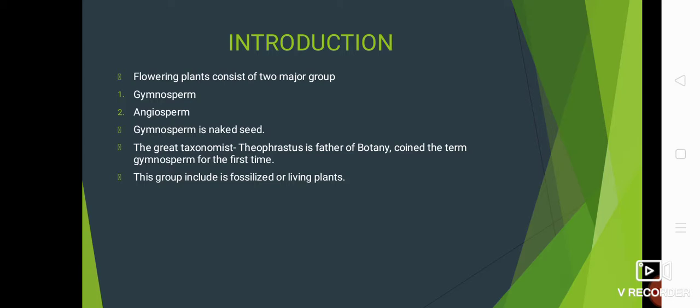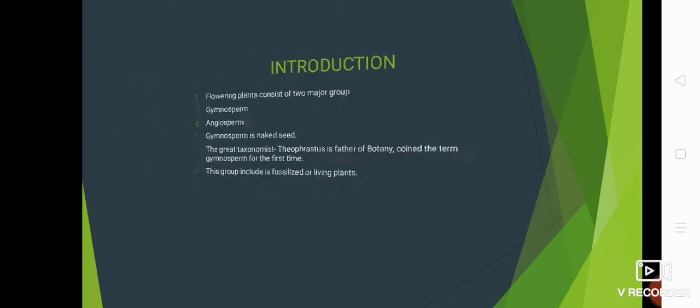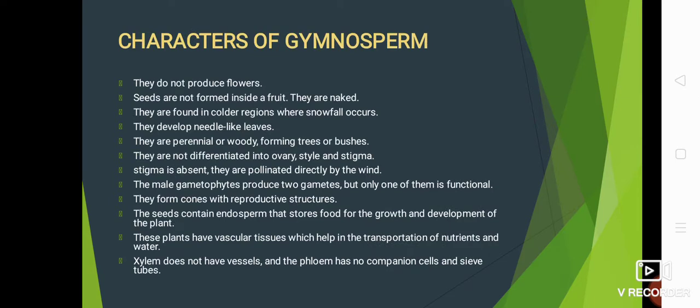The great taxonomist Euphrastus, who is known as the father of botany, coined the term gymnosperm for the first time. This group of plants originated in the Devonian period. This group includes fossilized or living plants, as gymnosperm plants are very rarely present today.